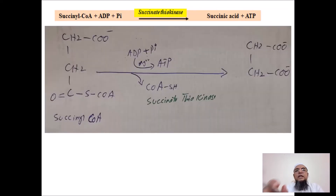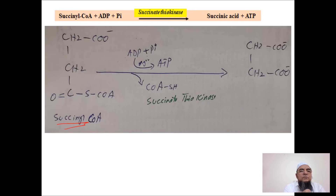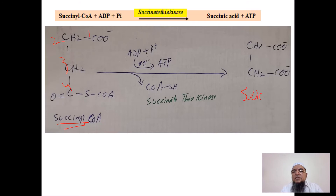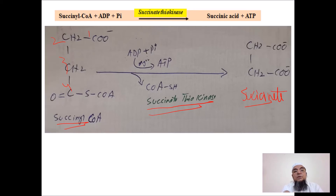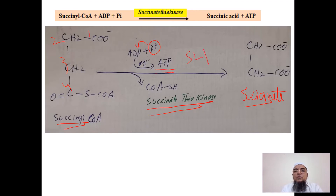The third reaction, a TCA cycle reaction, involves succinyl-CoA, a four-carbon compound, being converted into succinate. With the enzyme succinate thiokinase, this high-energy reaction brings inorganic phosphate, attaches it to ADP, and converts it into ATP, while CoA is released. This is again an example of substrate level phosphorylation.